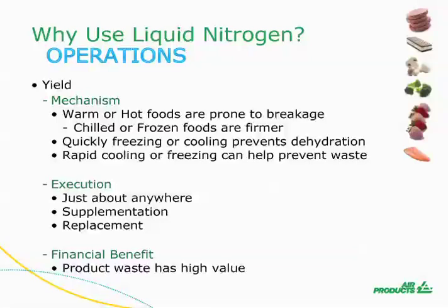Generally speaking, warm or hot foods are prone to more breaking. Chill them or freeze them and they get firmer and easier to handle, chop, cut, or slice, thereby reducing fines. Freezing or cooling quickly, as we discussed in Part 2, prevents dehydration as well.